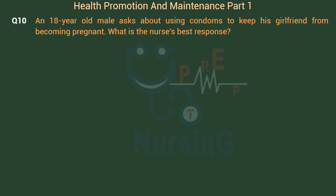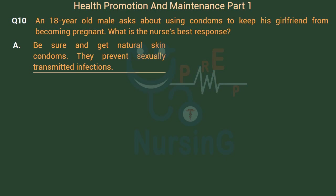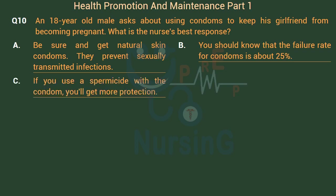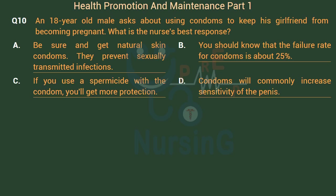An 18-year-old male asks about using condoms to keep his girlfriend from becoming pregnant. What is the nurse's best response? Option A: Be sure and get natural skin condoms — they prevent sexually transmitted infections. Option B: You should know that the failure rate for condoms is about 25%. Option C: If you use a spermicide with a condom, you'll get more protection. Option D: Condoms will commonly increase sensitivity of the penis.